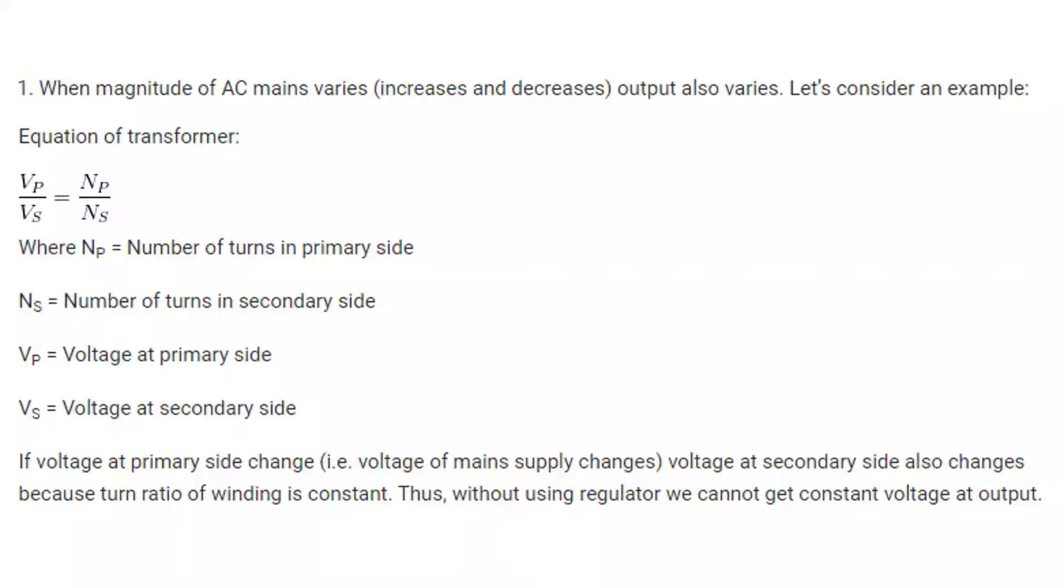If you see the equation of the transformer, VP divided by VS equals NP divided by NS, where NP and NS are the number of turns in primary and secondary side. Similarly, VP and VS are primary side voltage and secondary side voltage. If voltage at primary side changes, that is voltage of mains supply changes, voltage at secondary side also changes because turn ratio of winding is constant. Thus without using a regulator, we cannot get constant voltage at output.